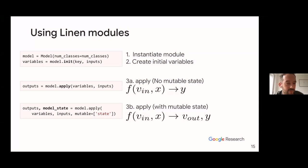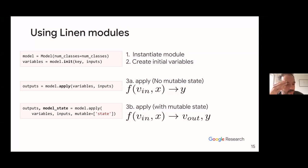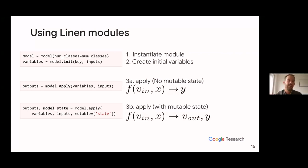We use a number of predefined modules here, and Flax has automatic shape inference — we don't make any assumptions about the shape of X; it's automatically inferred when you initialize the model with a specific input. The parameter tree is automatically created as a dictionary, with names matching what you assigned to self — so self.conv becomes 'conv' in the parameter tree, similar to how it's done in PyTorch.